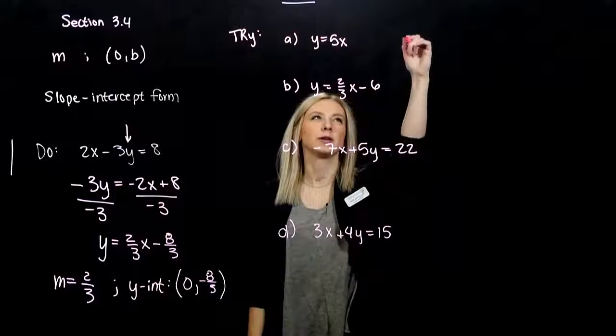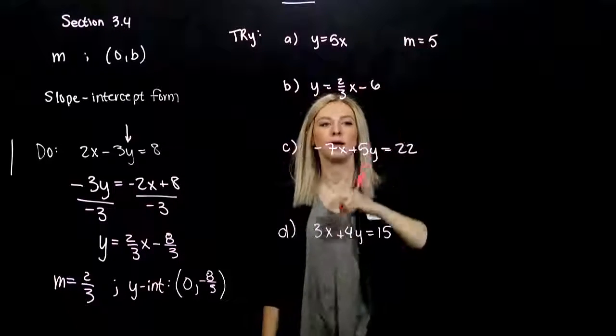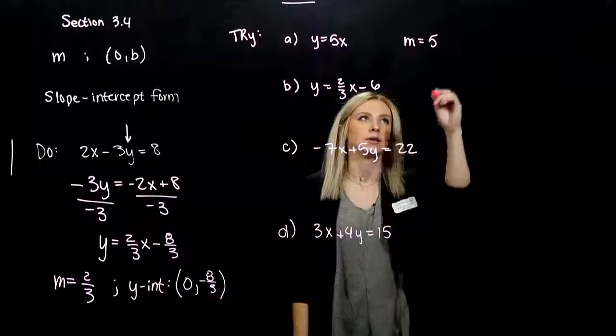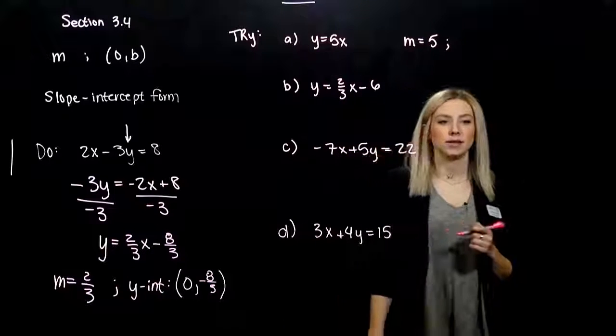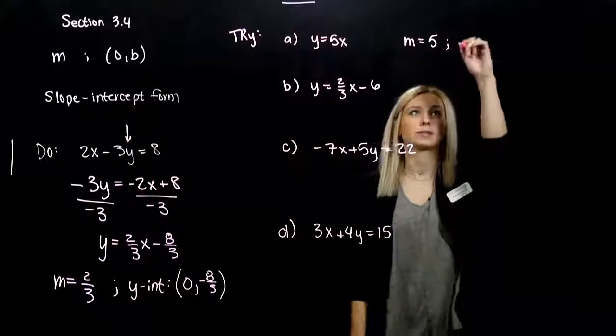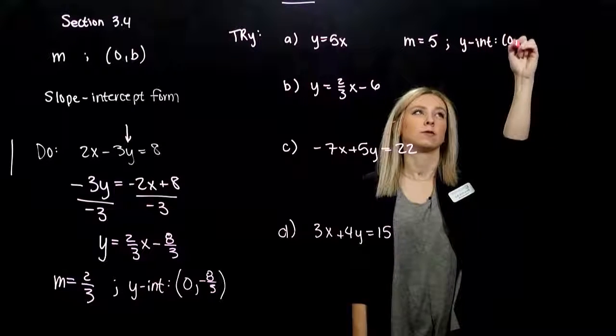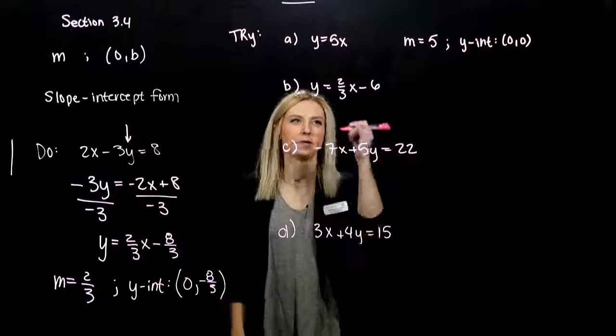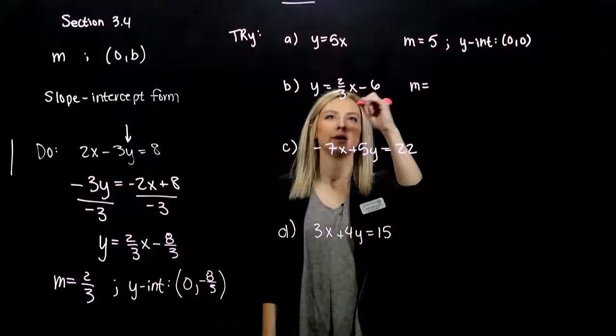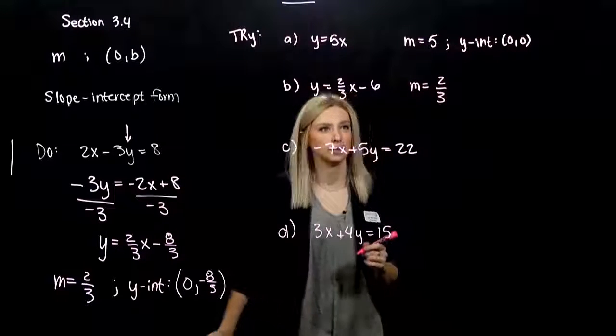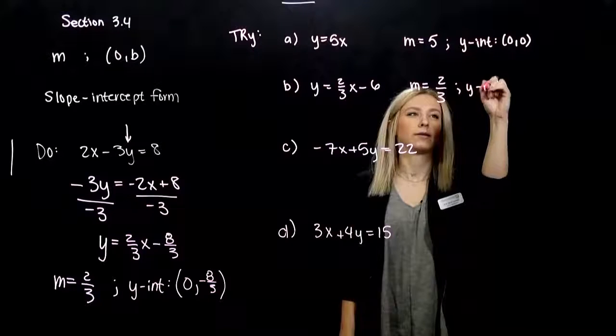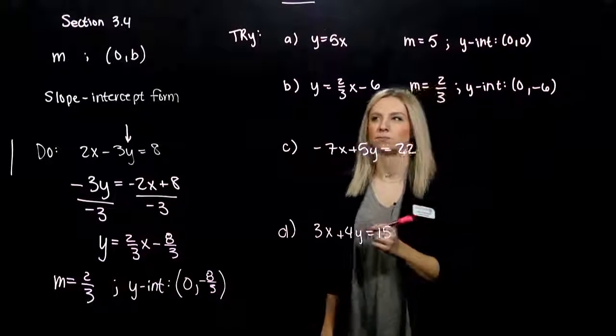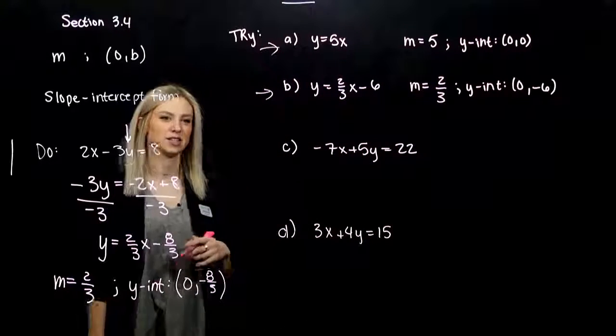For part a, the slope is 5, the coefficient on the front of x. The line is going through and crossing the y-axis at (0, 0), also the x-axis at the same time. It's going through the origin. For part b, slope is 2/3, increasing left to right. Y-intercept is at (0, -6). When they're in that form, slope-intercept is easy. Just pluck off the values.